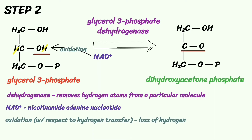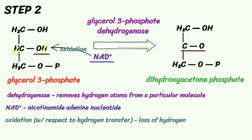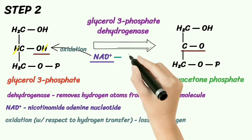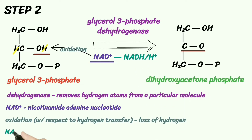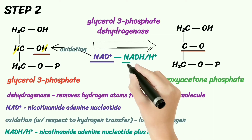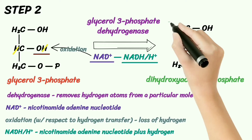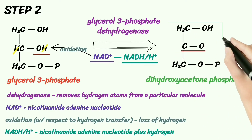Meanwhile, the hydrogen in the second alcohol group will transfer to the nicotinamide adenine dinucleotide. This will produce the nicotinamide adenine dinucleotide plus a free hydrogen ion. This is how the dihydroxyacetone phosphate is produced.